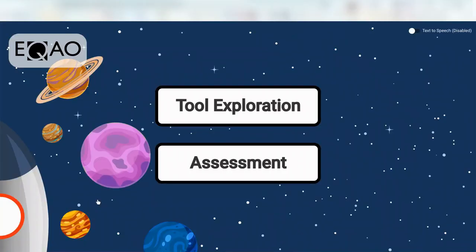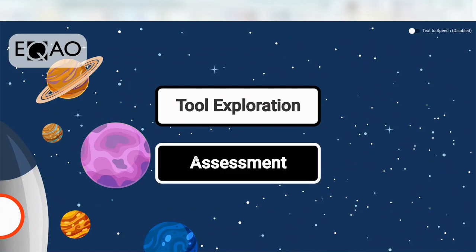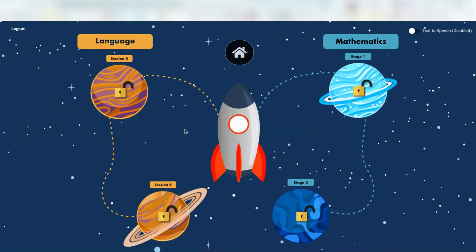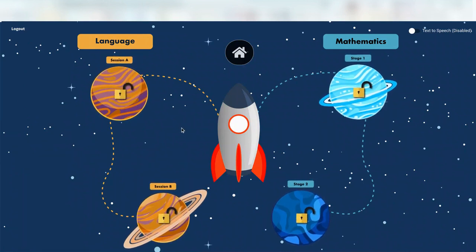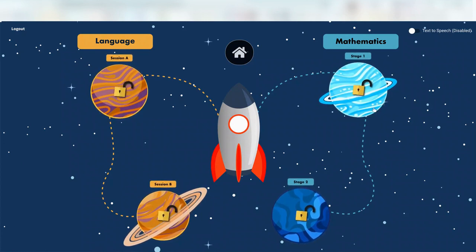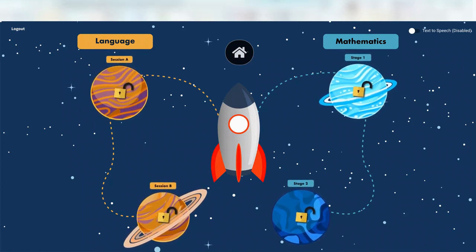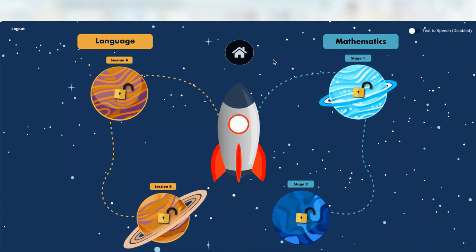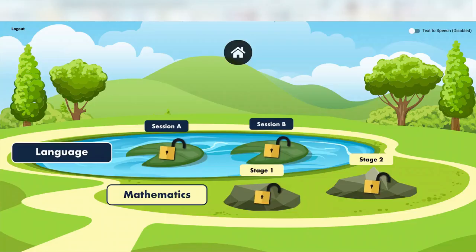Here is what the grade six testing platform looks like. It looks a little bit different. And instead you can see I'm now in space and I have language, I have math, I have session A and B for language, stage one and two for math. Some of the accessibility tools are different in grade three compared to grade six but I'll get to that when it's time.